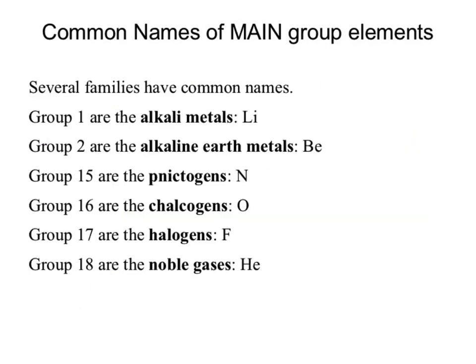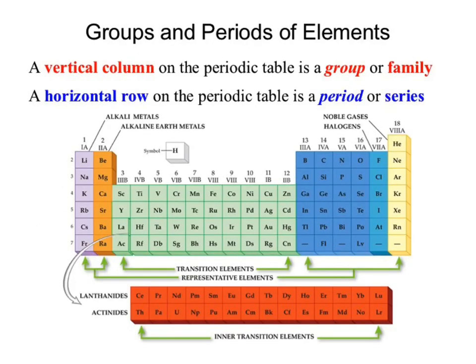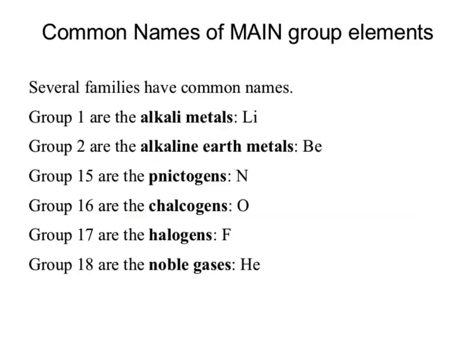So, common names. This is from the textbook — it's named a bunch of different areas. They really aren't that important to know by name, but you might hear people reference them. These are some of the more common names for individual groups. Group one is the alkali metals — everything under lithium is known as an alkali metal.